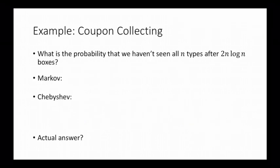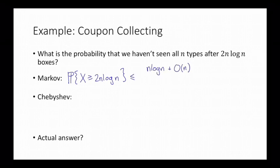Now we can try both inequalities to bound the probability that we haven't seen all n coupons after 2n log n boxes. Markov's inequality says the probability that x ≥ 2n log n is at most (n log n + O(n)) / (2n log n), which simplifies to at most 1/2 + o(1), where the o(1) term goes to 0 as n → ∞.